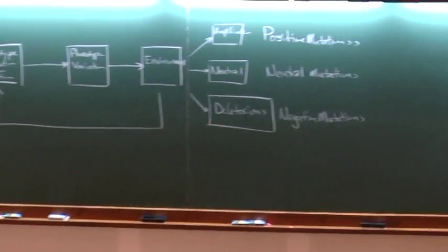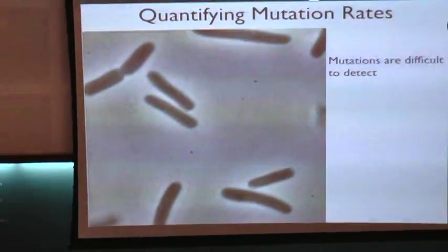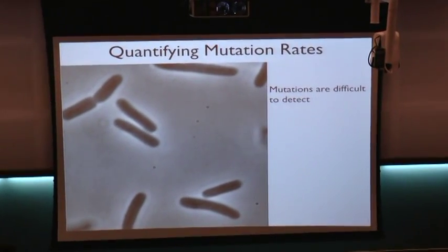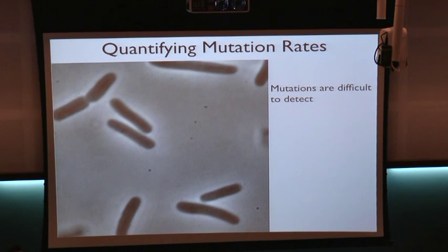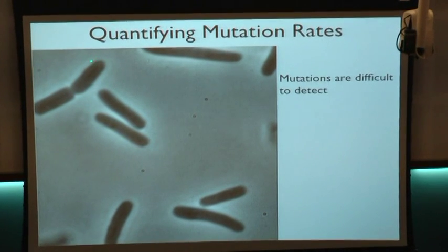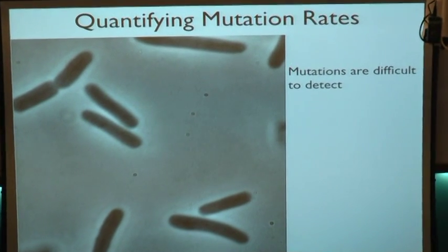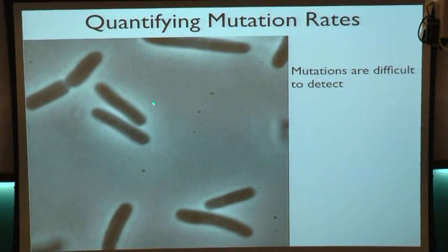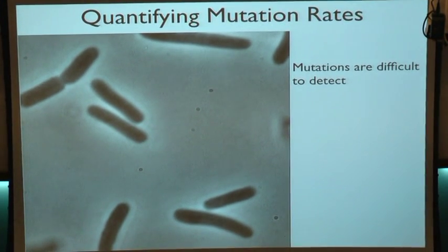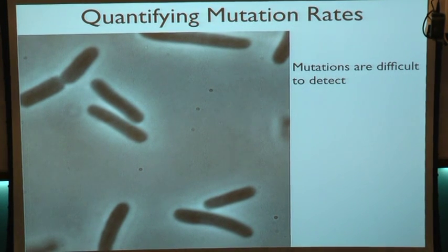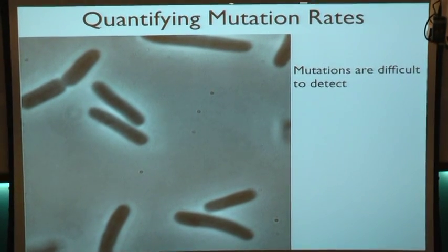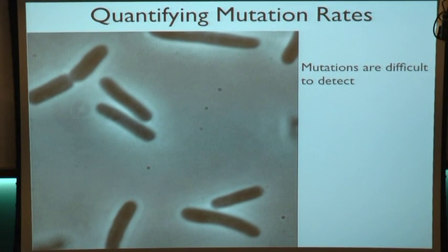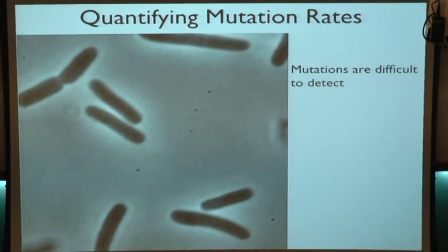How do we measure these mutation rates and how can we tell what they do to the organism? It turns out that measuring mutation is very difficult because most of the detection methods we currently use in experimental biology are indirect. For example, if you look at E. coli, you can't tell just by looking at them whether one is genetically different than another. There's not necessarily any outward change in their appearance that indicates they've undergone some kind of mutation.